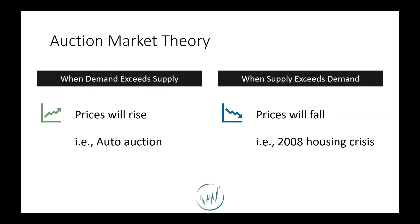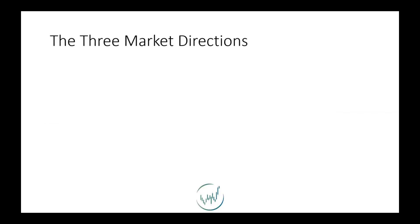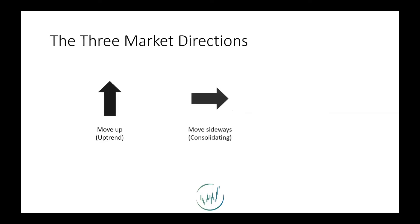Let's discuss the different directions that the market can move. The good news is there's only three of them. It can go up in an uptrend, it can go sideways when it's consolidating, and it can go down in a downtrend.